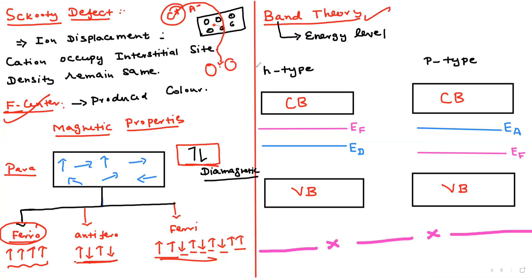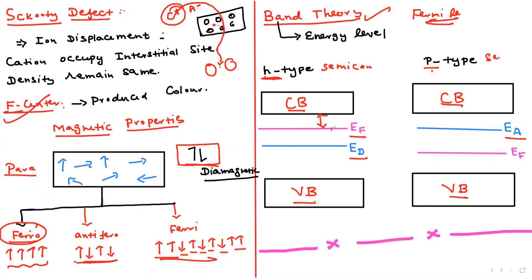Band theory: n-type and p-type semiconductors. In an n-type semiconductor, the Fermi level lies between the donor energy level and the conduction band — i.e., close to the conduction band. In a p-type semiconductor, the Fermi level lies between the acceptor energy level and the valence band — i.e., close to the valence band. This type of question is generally asked in the exam.